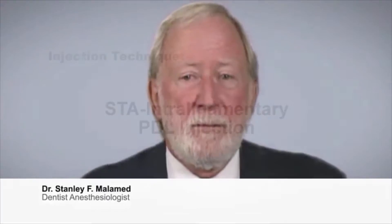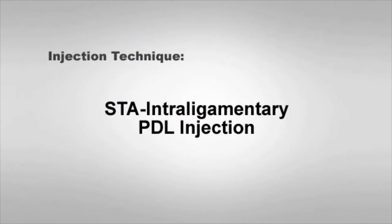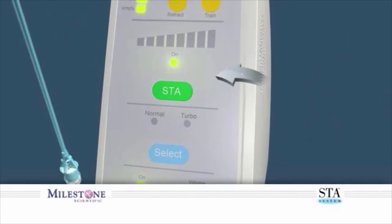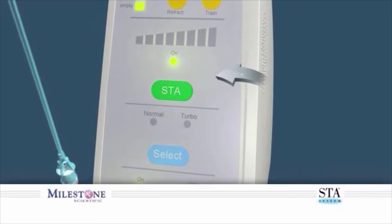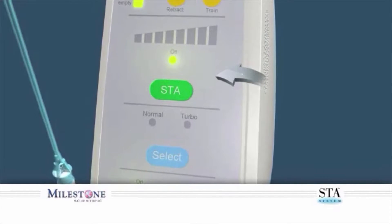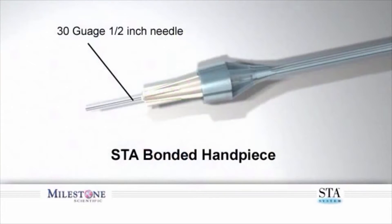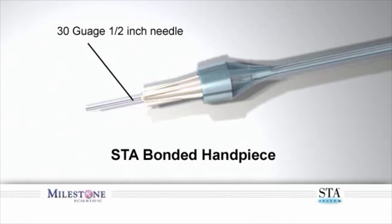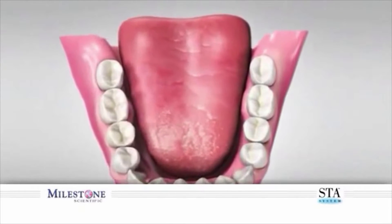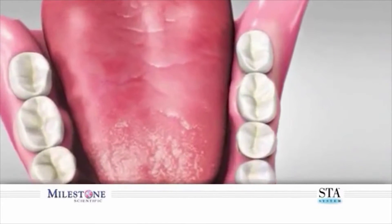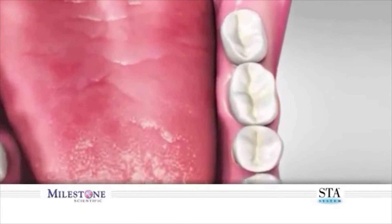Injection technique: The Wand STA intraligamentary PDL injection. Verify the wand system is set to the STA mode. This injection is performed using the 30-gauge 1/2-inch bonded wand handpiece. When performing the Wand STA intraligamentary injection on a multi-rooted mandibular molar, it is recommended that two sites be used.